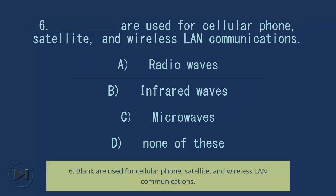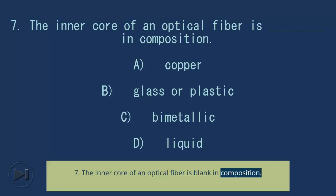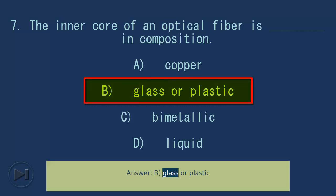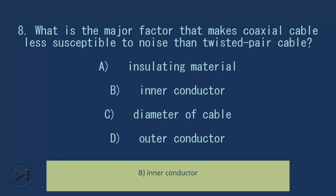Question 6: Blank are used for cellular phone, satellite, and wireless LAN communications. A) radio waves, B) infrared waves, C) microwaves, D) none of these. Answer: C, microwaves. Question 7: The inner core of an optical fiber is blank in composition. A) copper, B) glass or plastic, C) bimetallic, D) liquid. Answer: B, glass or plastic. Question 8: What is the major factor that makes coaxial cable less susceptible to noise than twisted pair cable? Answer: D, outer conductor.